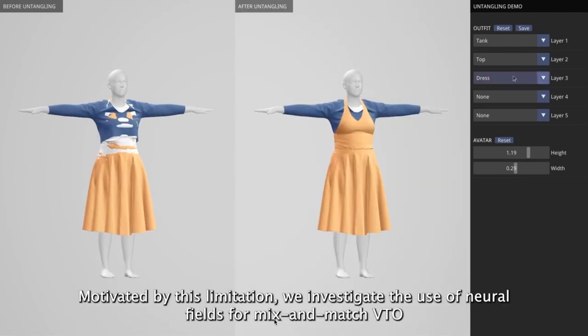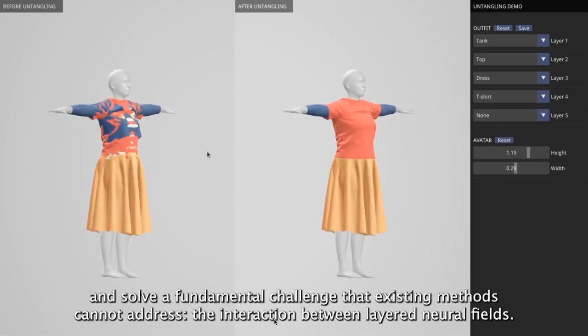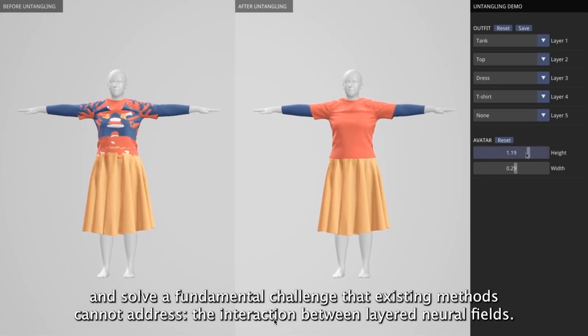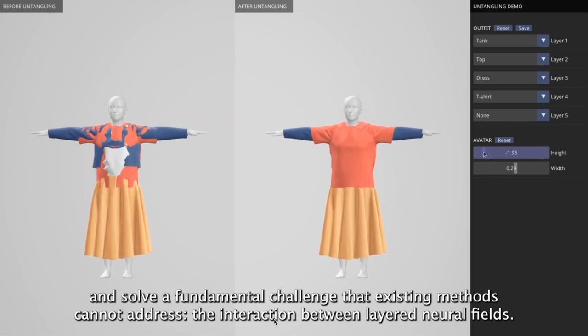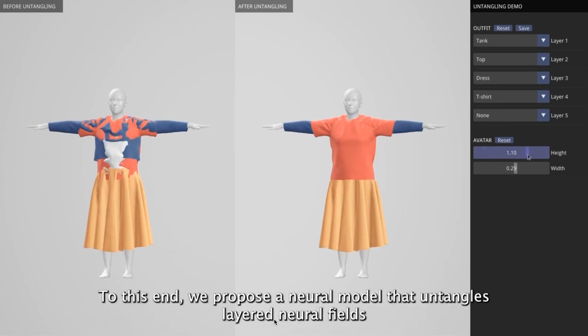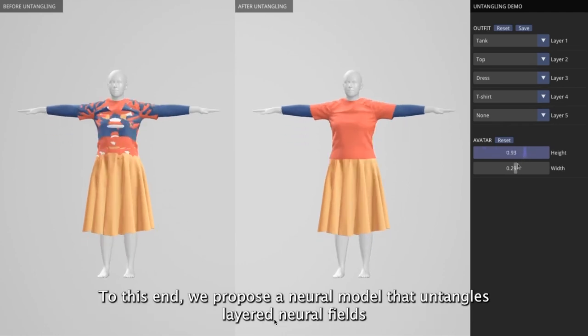Existing solutions result in entangled configurations when used for multiple garments. Motivated by this limitation, we investigate the use of neural fields for mix and match virtual try-on and solve a fundamental challenge that existing methods cannot address: the interactions between layered neural fields.